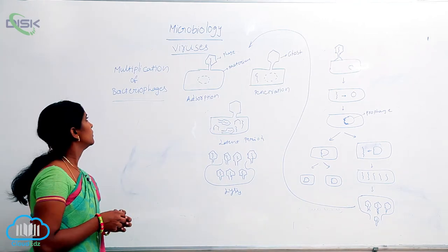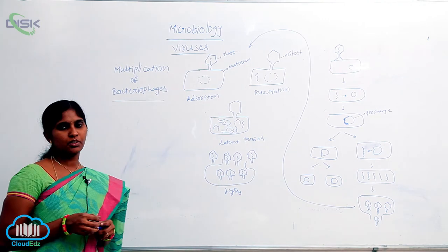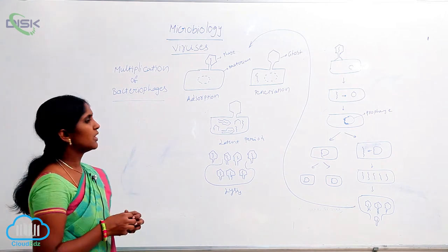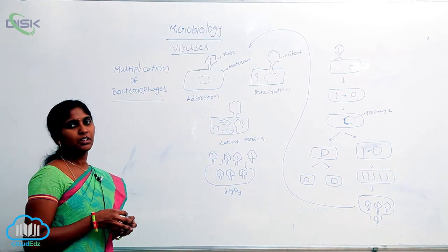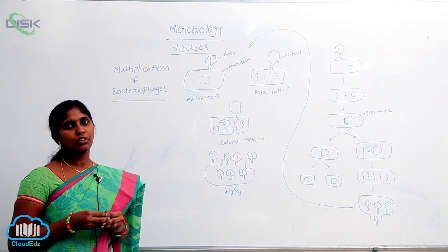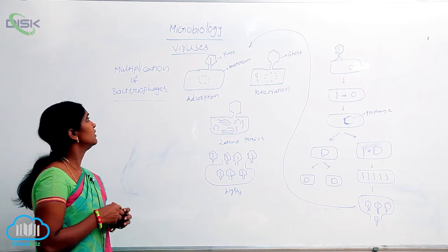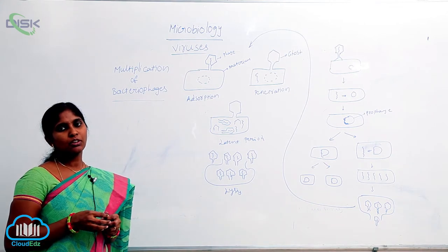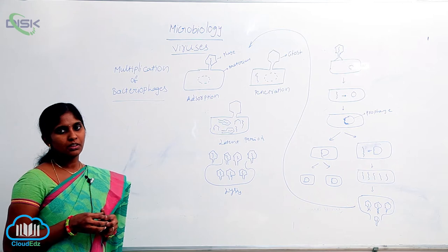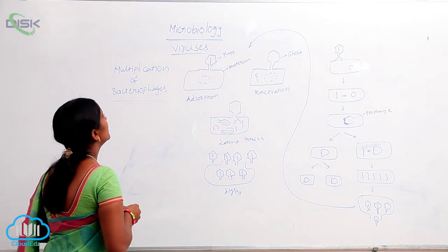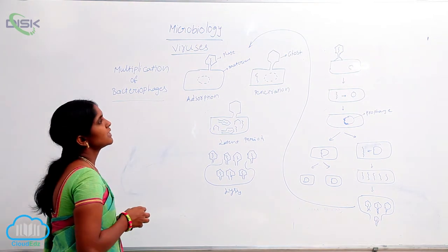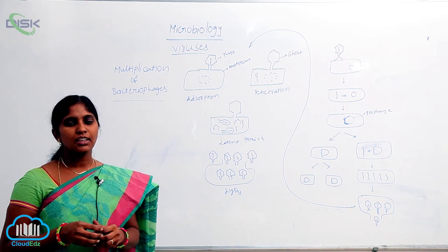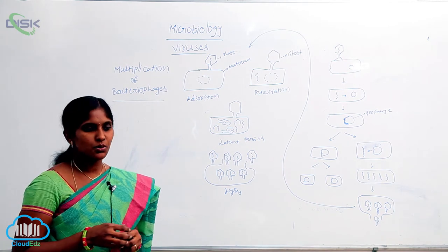Multiplication of bacteriophages. Bacteriophages are viruses which infect the bacteria — they live on bacteria. They can multiply by two alternative mechanisms: lytic cycle and lysogenic cycle.